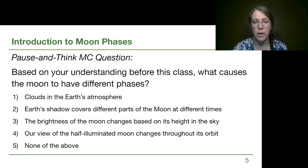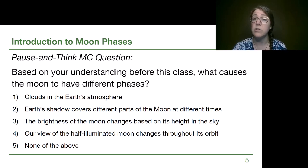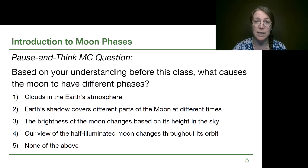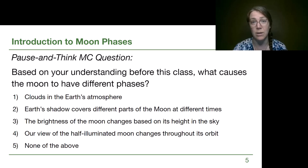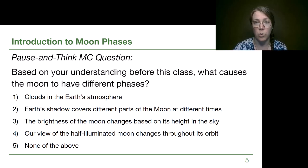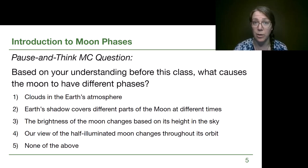You might have been swayed by option two, which is incorrect but is the most common misconception — that it's Earth's shadow causing the monthly phases. We're going to address that over two or three videos. Instead, the correct answer is option four: our view of the half-illuminated moon changes throughout its orbit. It has to do with the orientation and alignment of the Sun, Earth, and Moon.